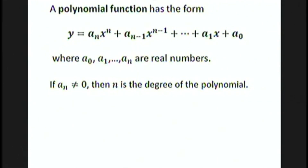A polynomial function has the form y equals a sub n times x to the n, plus a sub n minus 1 times x to the n minus 1, dot dot dot, plus a1x plus a0, where a0, a1, through a sub n are all real numbers. Don't worry too much about this messy looking form — when we do some examples in just a moment, it'll be clear what a polynomial is. If a sub n is not 0, then n is the degree of the polynomial. In other words, the degree is just the highest power that appears in the polynomial.